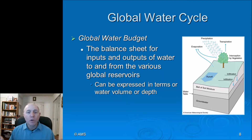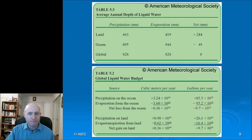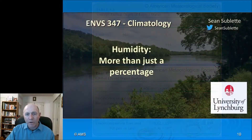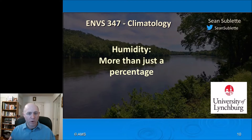The global water budget is like a big balance sheet for the inputs and outputs of water to and from various global reservoirs — the ice sheets, oceans, and lakes are all reservoirs. Globally, the average annual depth of liquid water is on the order of about 828 millimeters. Humidity is a basic, generic word for moisture in the atmosphere.